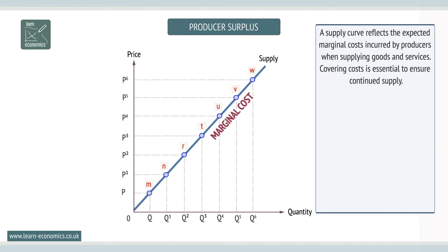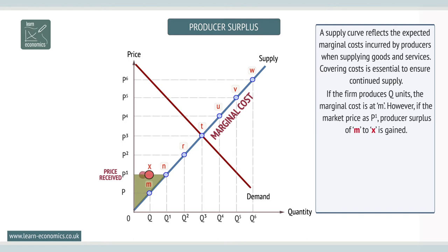Covering costs is essential for firms. If the firm produces Q units, the marginal cost is at M. However, if the market price is P1, producer surplus of M to X is gained.